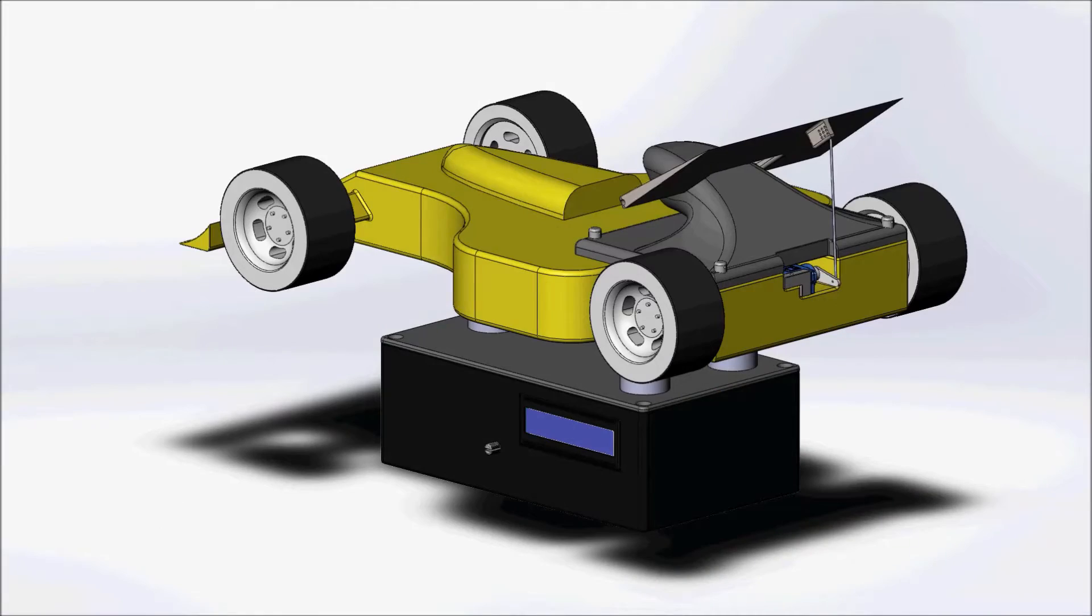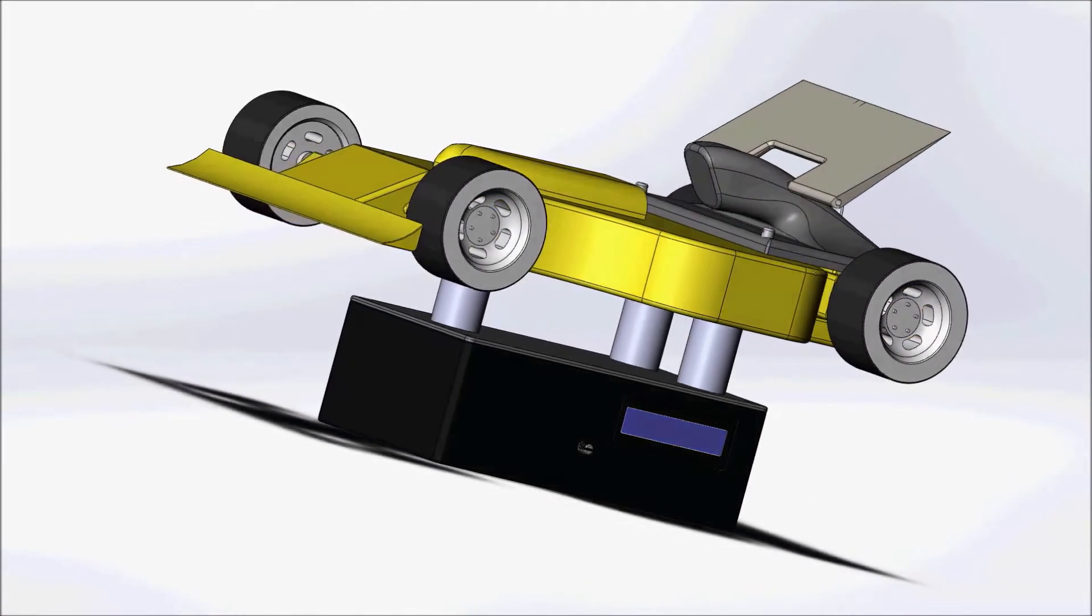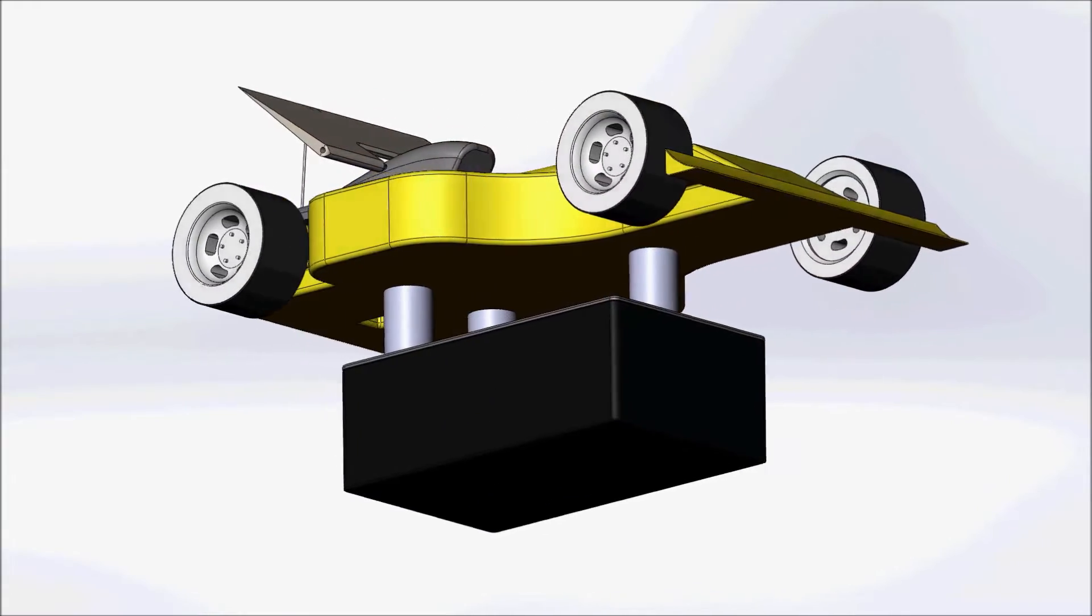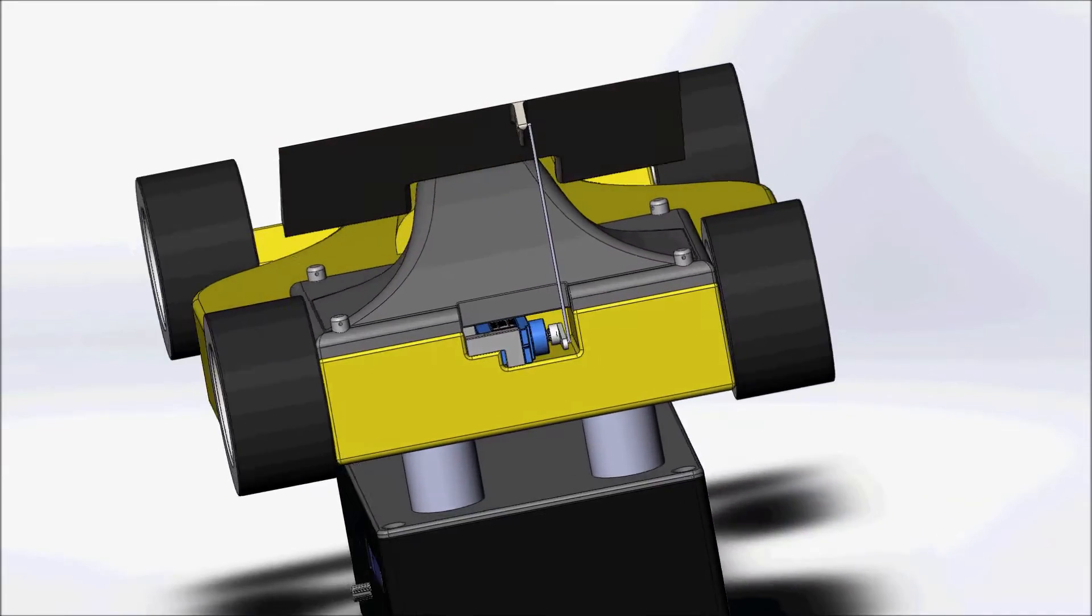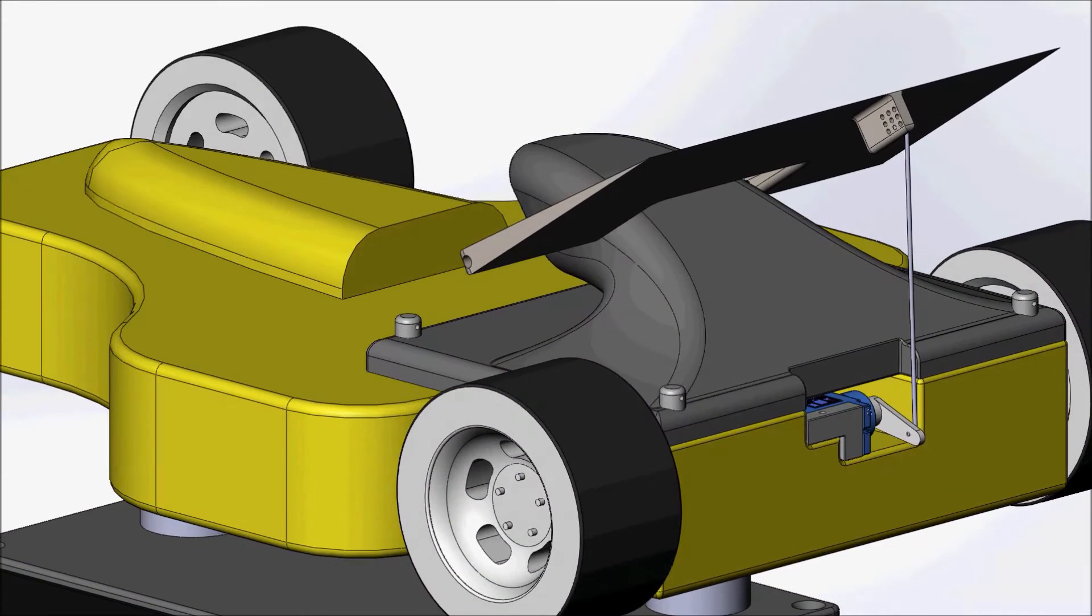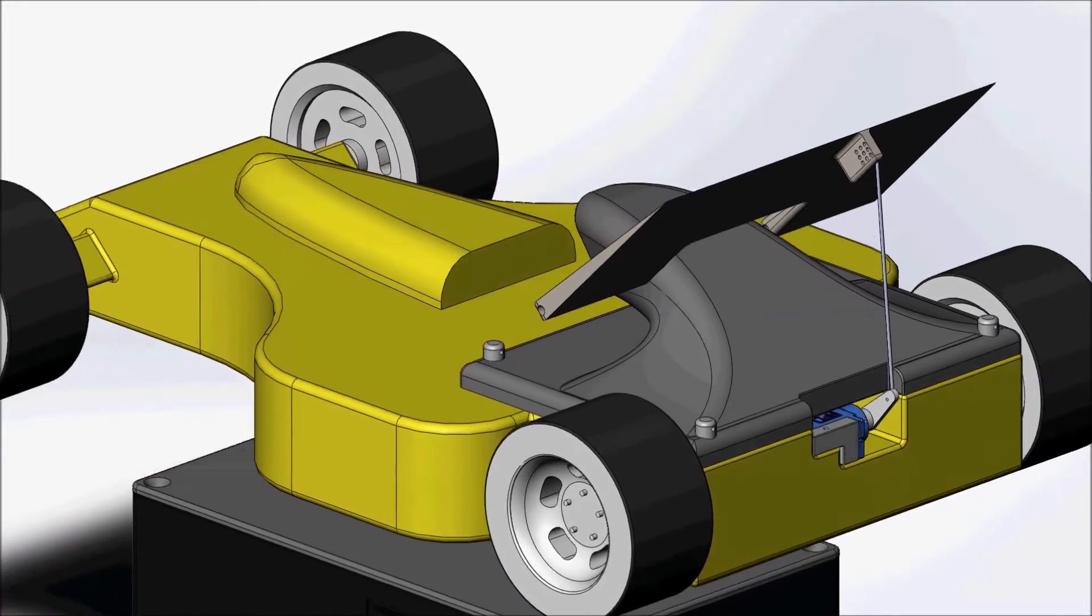The functionality of my drag reduction system can be seen in this short animation. A servo moves a wing up or down depending on the speed of the motors. The motors are attached to the rear wheels and are controlled by a potentiometer. When the motors reach about 75% of their maximum speed, the servo is actuated.